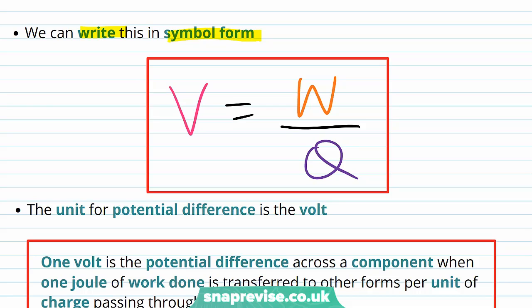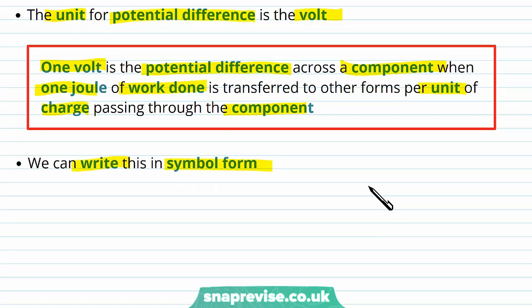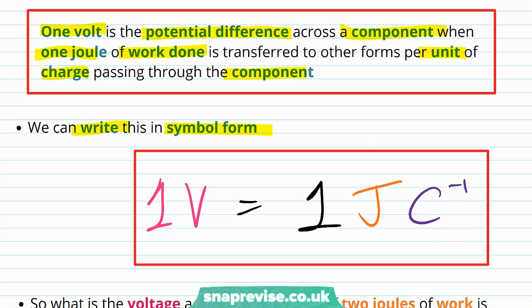This is our equation for potential difference, or voltage. The unit for potential difference is the volt. One volt is the potential difference across a component when one joule of work is transferred per unit of charge passing through the component. In symbol form: 1 V = 1 J/C. This comes from our equation — the unit of work is the joule and the unit of charge is the coulomb, so dividing 1 joule by 1 coulomb gives 1 joule per coulomb, which is equivalent to 1 volt.